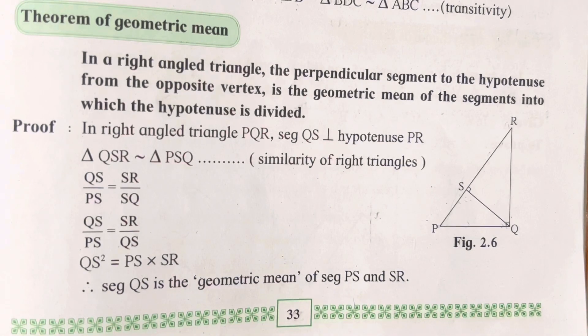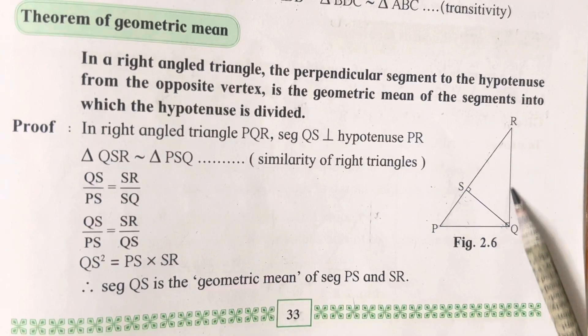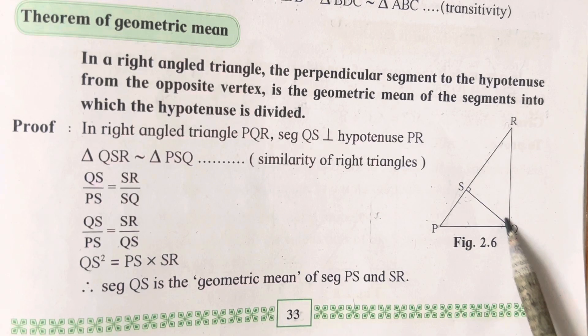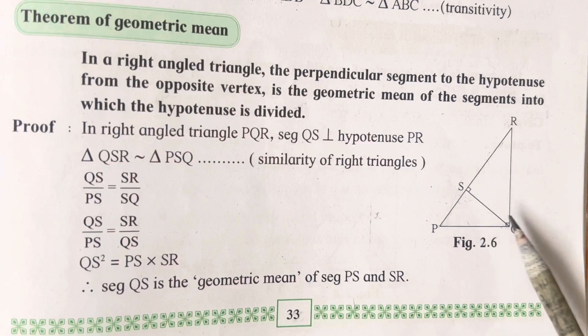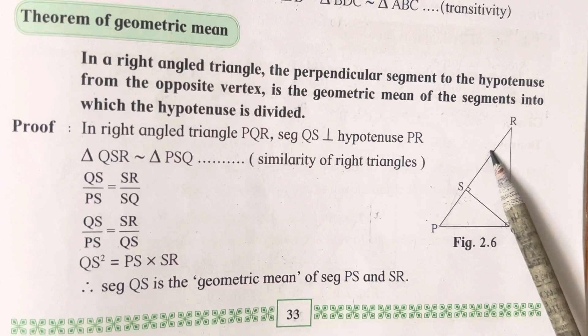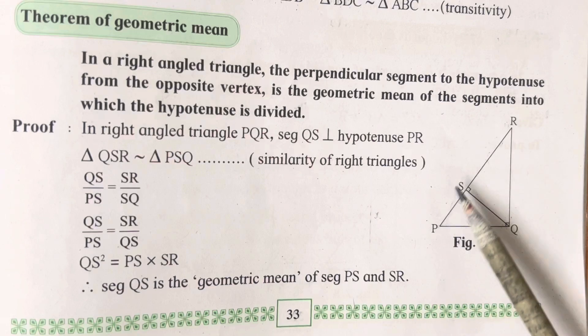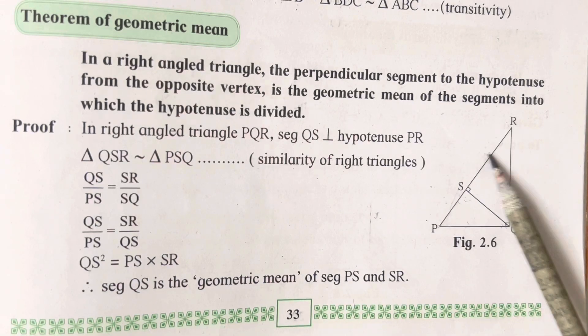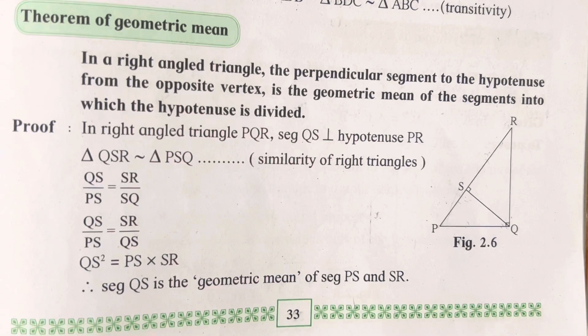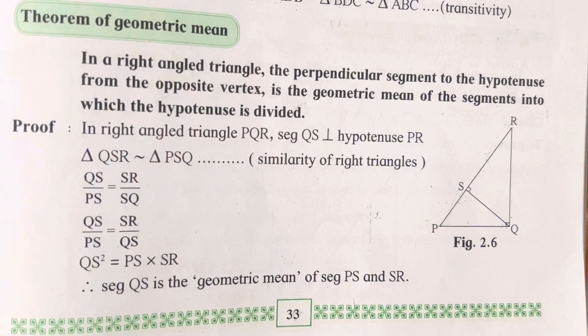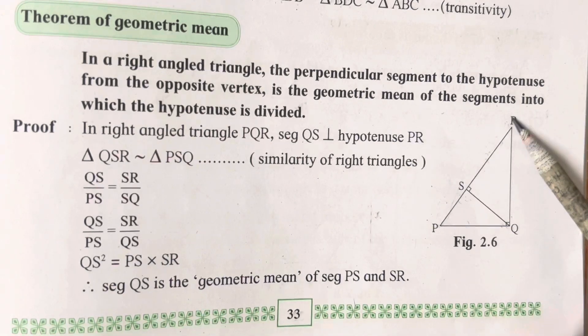What does the statement say? When we draw a perpendicular segment to the hypotenuse from the opposite vertex, it is the geometric mean of the segments into which the hypotenuse is divided. It is not divided equally—they have not mentioned it. It's not divided equally but it is divided.